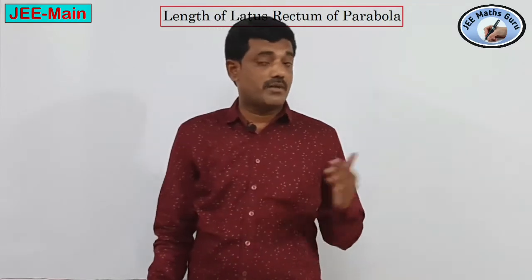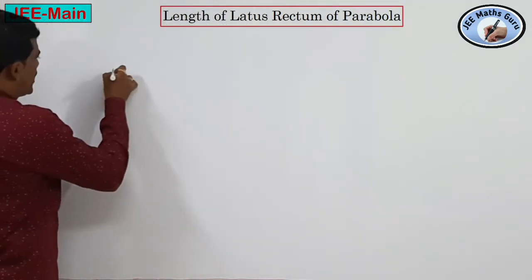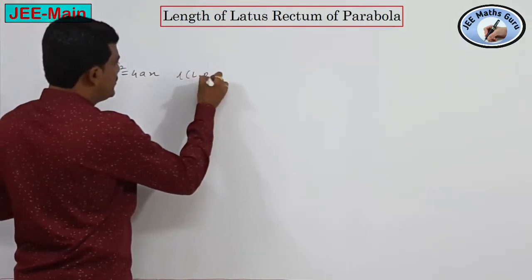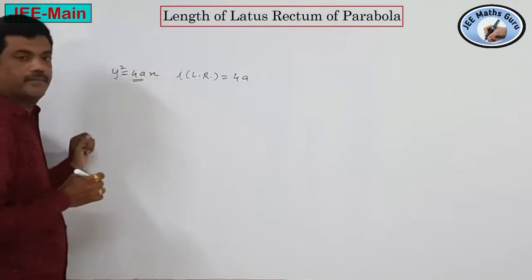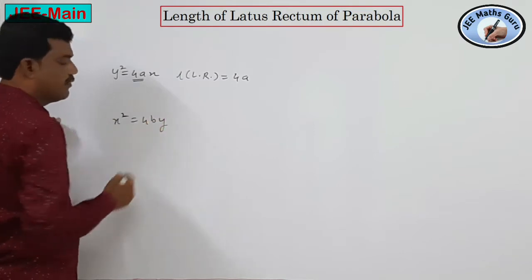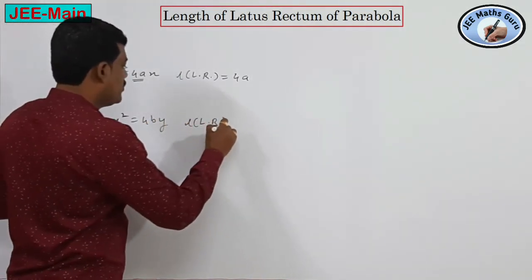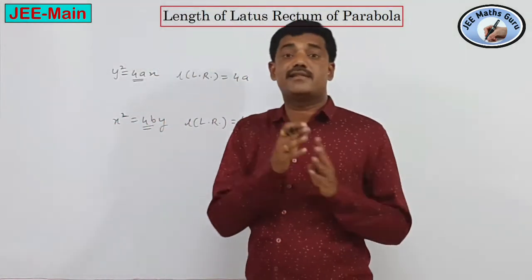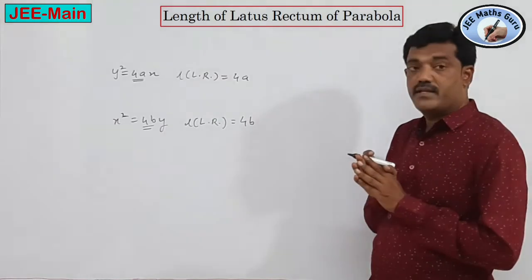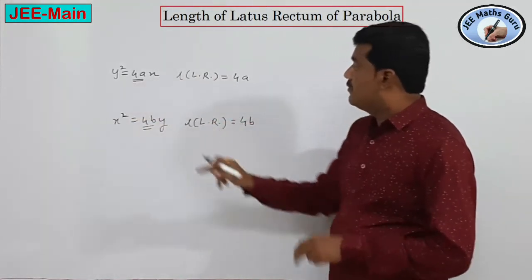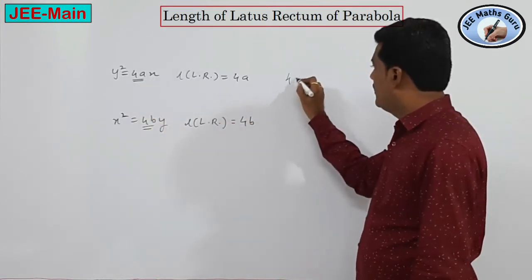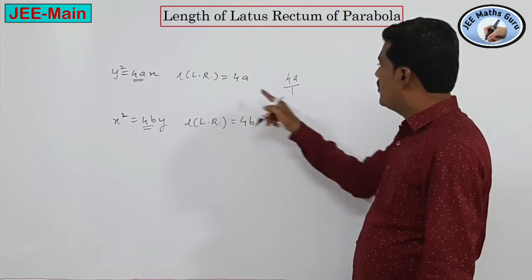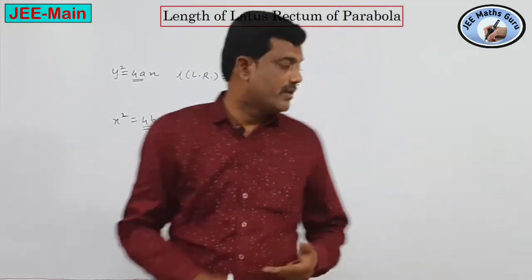If the parabola is the standard form y² = 4ax, we all know the length of the latus rectum is 4a. We can derive a formula: the coefficient of x is 4a, divided by the coefficient of y² which is 1, giving 4a upon 1 = 4a. So this is the length of the latus rectum of this parabola.